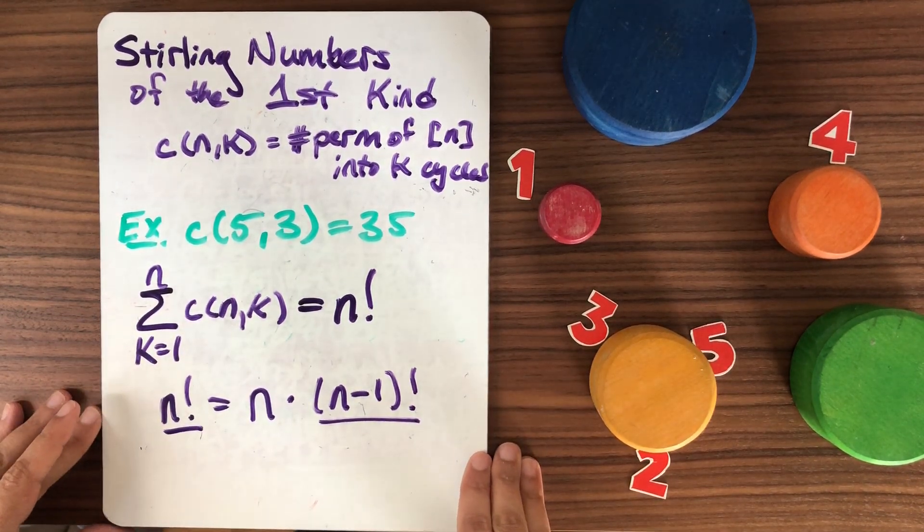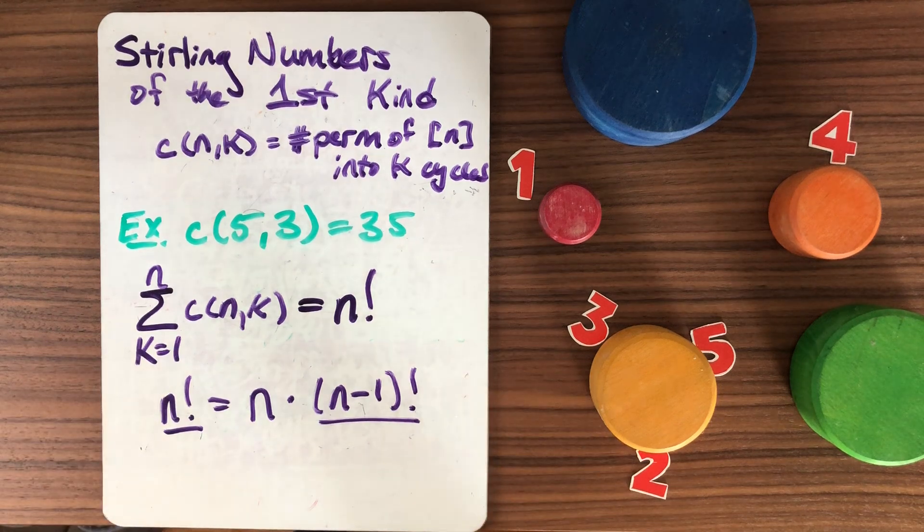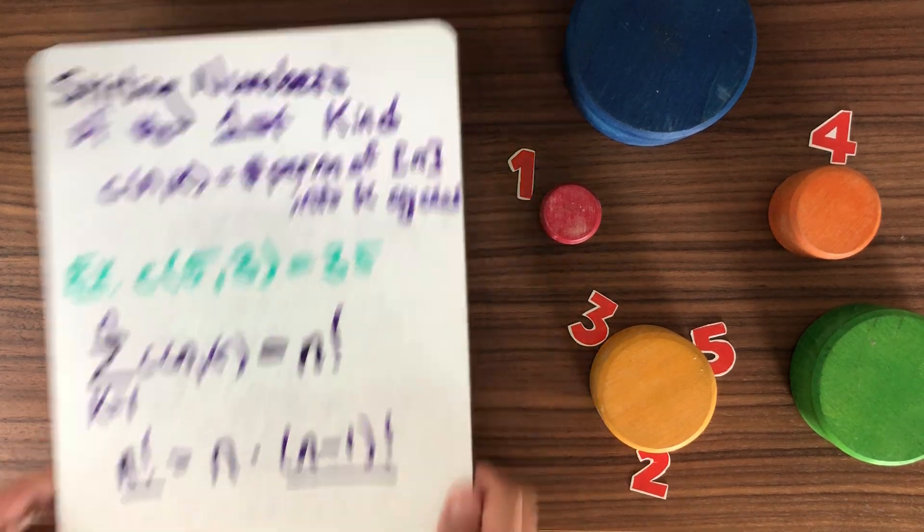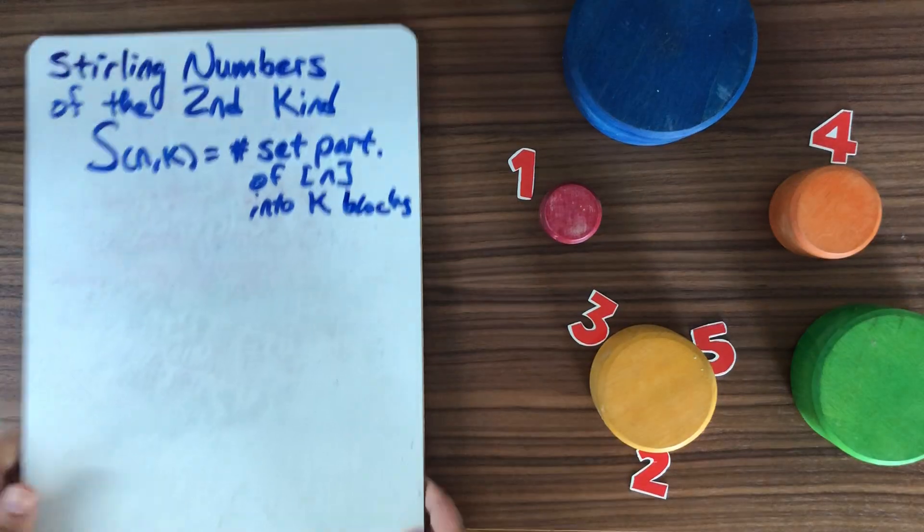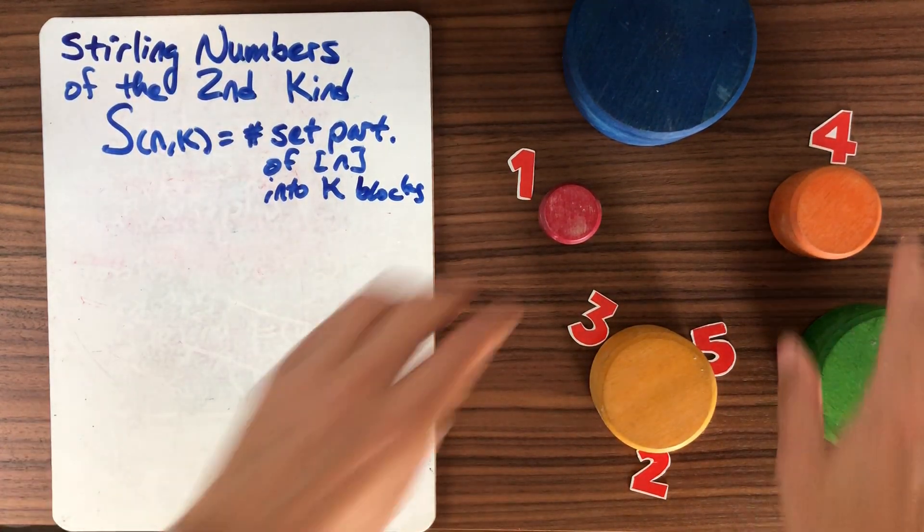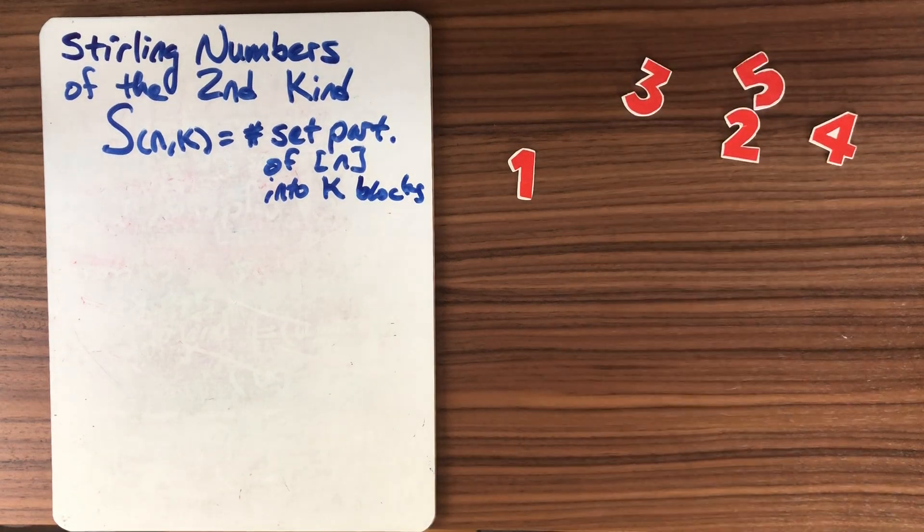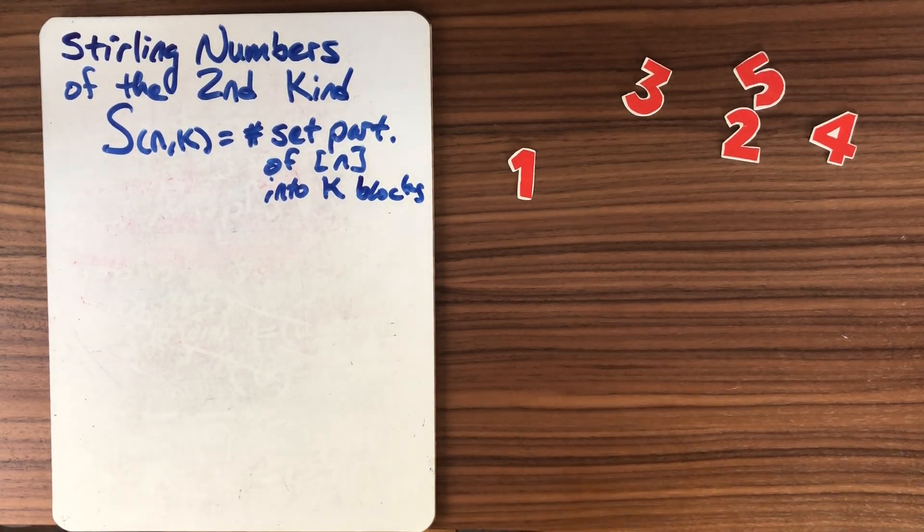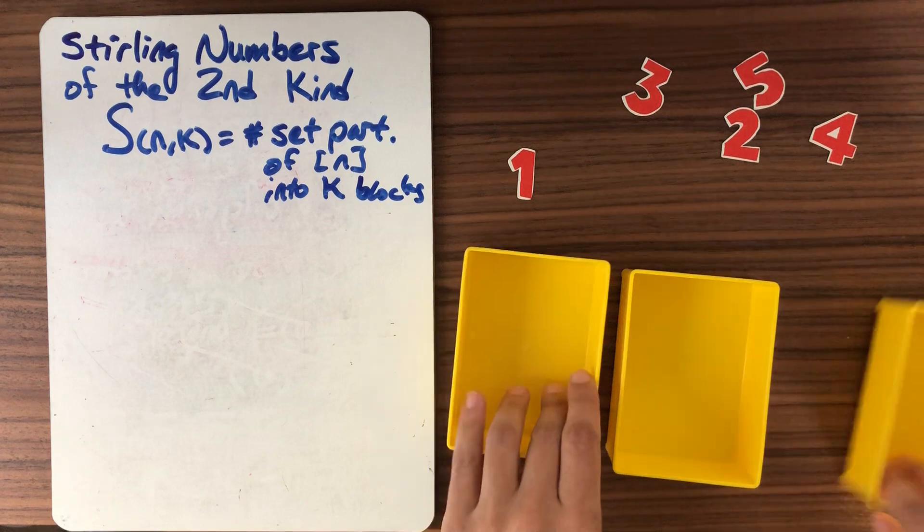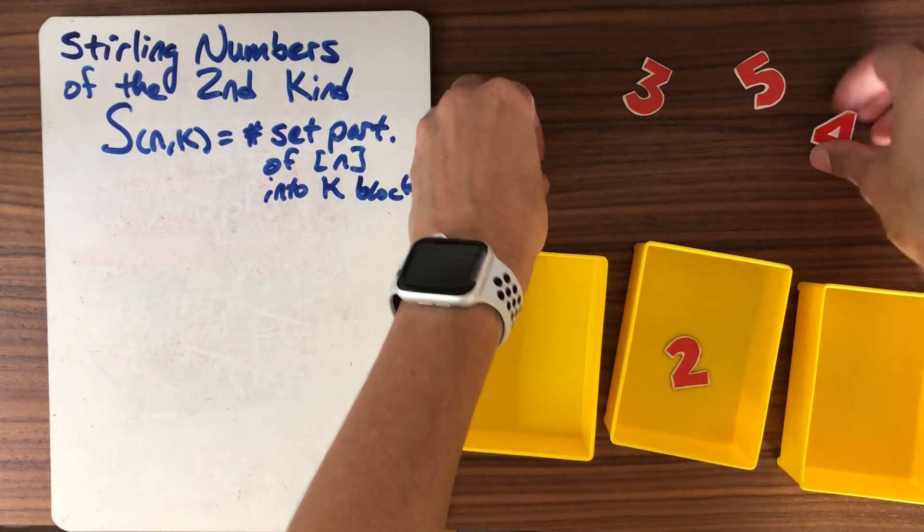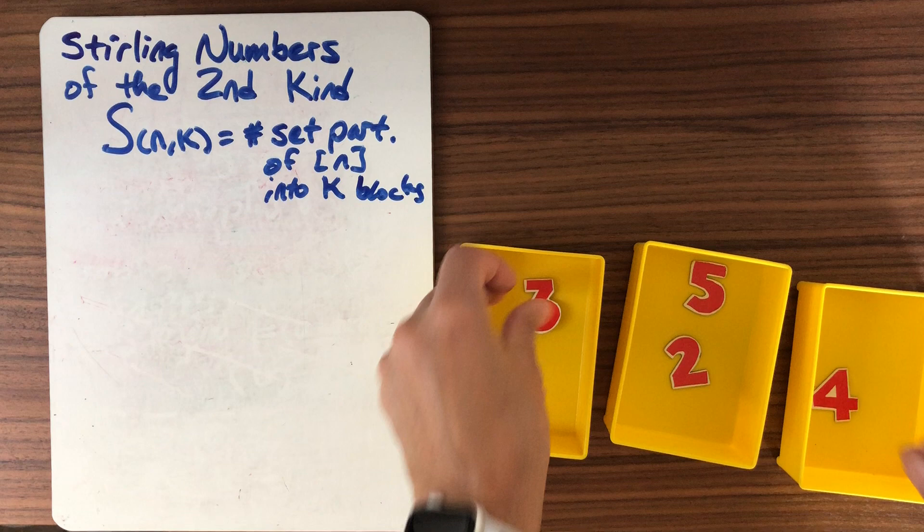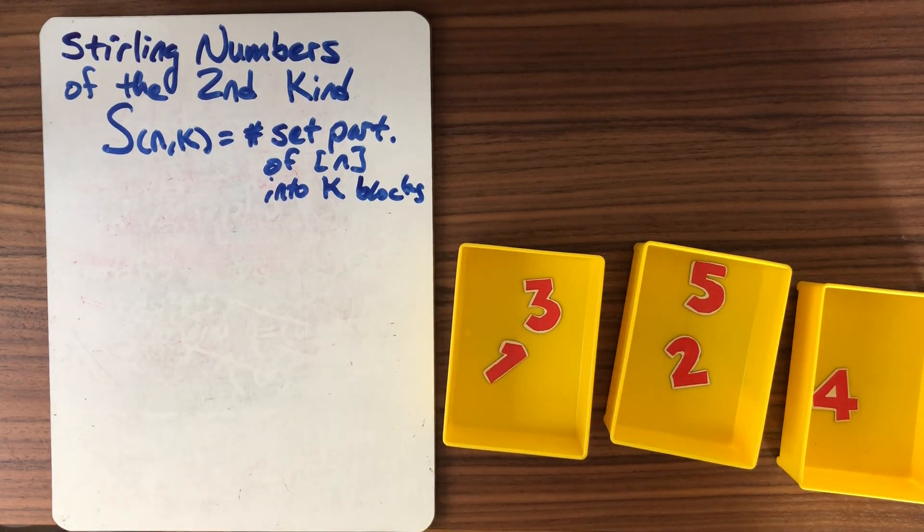So now we can ask ourselves, what happens if we do the same thing for the Stirling numbers of the second kind? So for Stirling numbers of the second kind, remember, we don't have the cycles anymore. We don't care about how things are arranged like that. What we care about is how they're arranged into blocks.